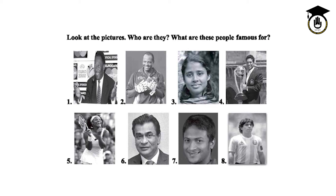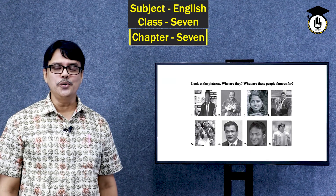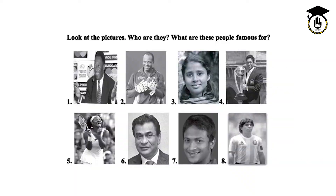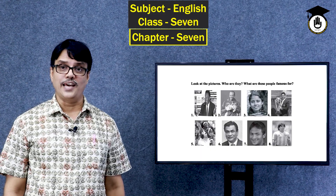And you see next — Serena Williams. She is an American tennis player. Next, Salahuddin. He is known as Kazi Salahuddin. He is president of the Bangladesh Football Federation. Next, you see the most favorite player of our cricket team — Shakib Al Hasan. I think you know him very well. Last picture — Diego Maradona, an Argentine football icon.